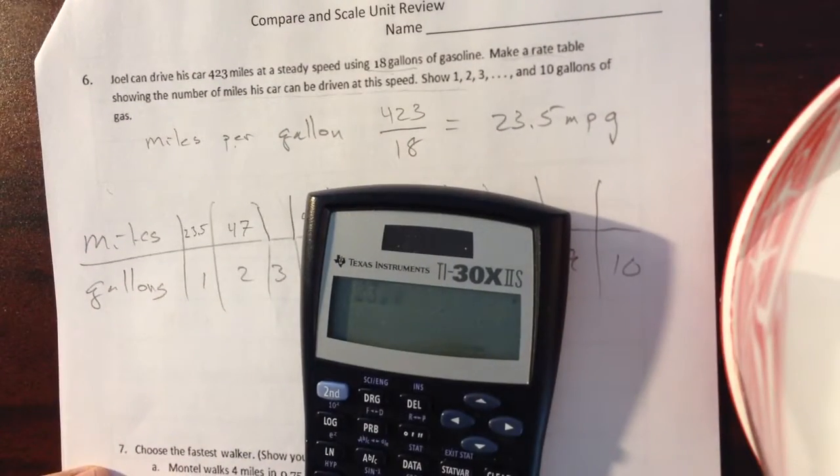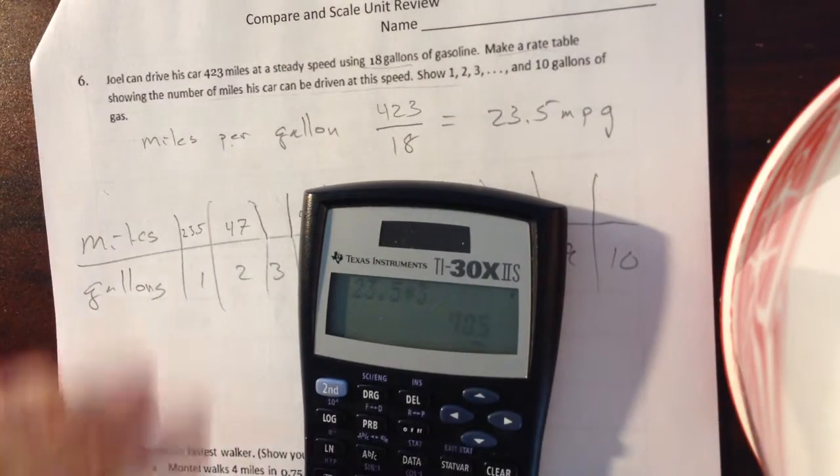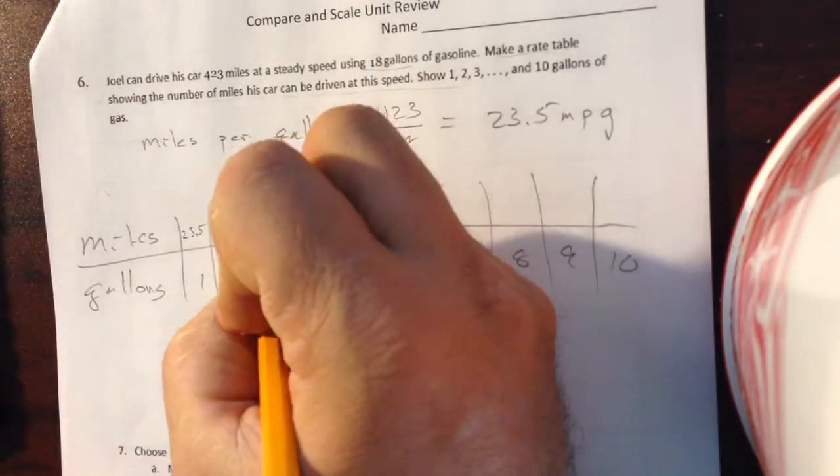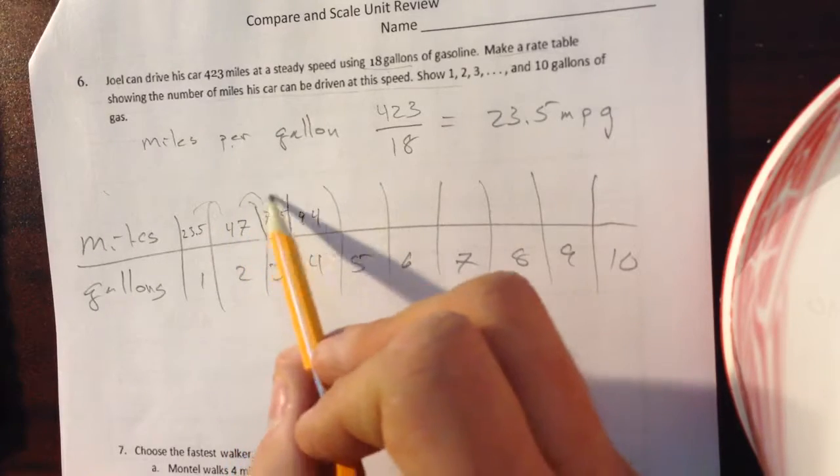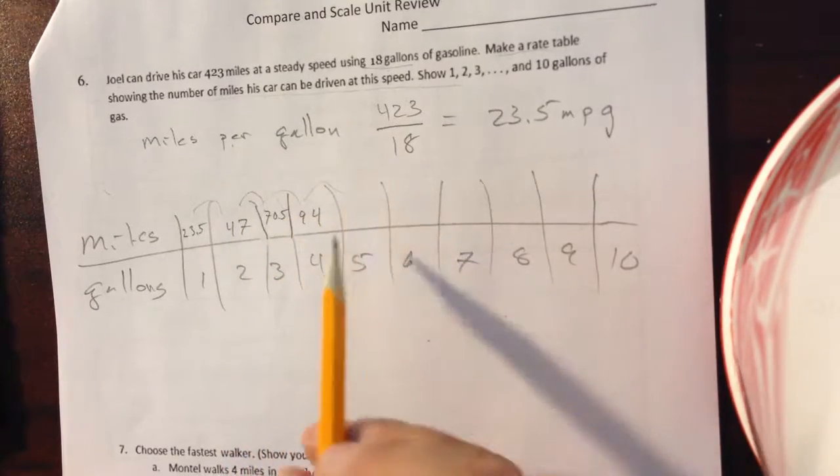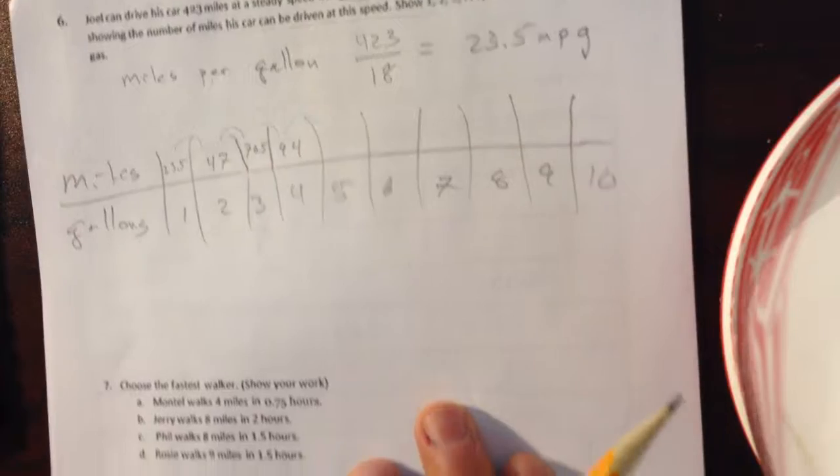So, you can go right down the chart and multiply it out, 70.5. Or, each time you're going up a gallon, you're getting another 23.5 miles. So, fill in that chart. Should be pretty easy with that.